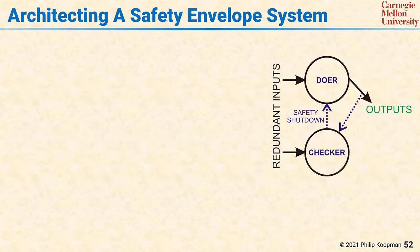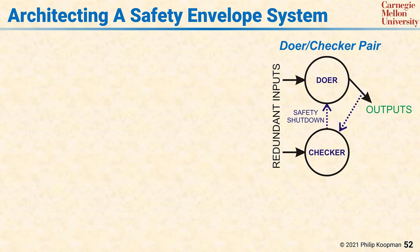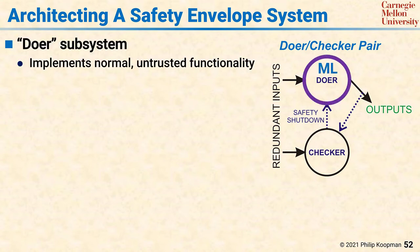A common architectural pattern for implementing a safety envelope is to use a doer-checker pair. In a doer-checker pair, there's a doer subsystem which implements the normal, potentially untrusted functionality. In a machine learning based system, the idea would be that the machine learning part goes in the doer. It may be somewhat trusted via validation, but not validated to have life-critical levels of dependability.